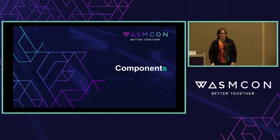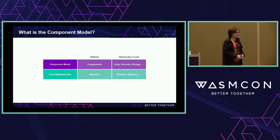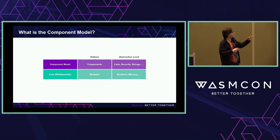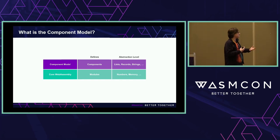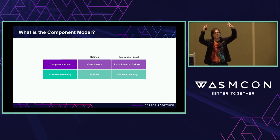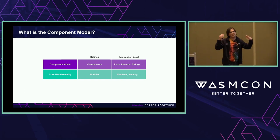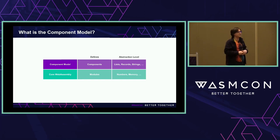So, components — what are they? The component model is a proposal that's layered on top of Core WebAssembly. Where Core WebAssembly defines modules, the component model defines components. Modules are lower level — they speak in terms of numbers and linear memories, integers and floating point values. Components are higher level and able to express more complicated semantics like records, lists, arrays, strings, resources, and other facilities. They're instrumental in expressing things as complicated as the WebAssembly system interface, WASI.